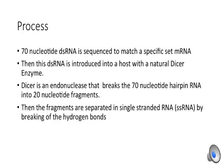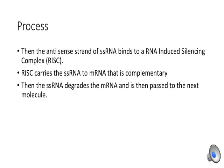This process includes semi-nucleotide dsRNA, which is sequenced to match a specific set of mRNA. This dsRNA is introduced into a host with a natural Dicer enzyme. The Dicer enzyme is an endonuclease that breaks the 70-nucleotide hairpin RNA into 20-nucleotide fragments. The fragments are then separated into single-stranded RNA (ssRNA) by breaking of the hydrogen bonds, and the antisense strand of ssRNA binds to an RNA-induced silencing complex.